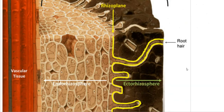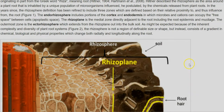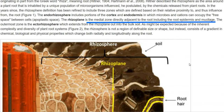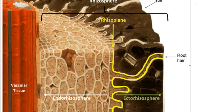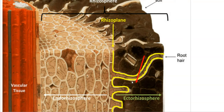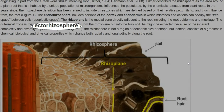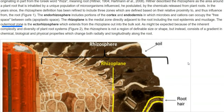The free space present within the cells is referred to as the apoplast region. The next one is the rhizoplane, which is a medial zone directly adjacent to the root including the root epidermis as well as mucilage. The rhizoplane region is present in association with the endorhizosphere on one side and the ectorhizosphere on the other side.